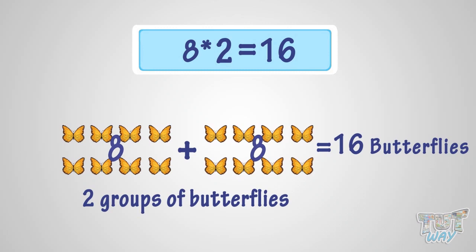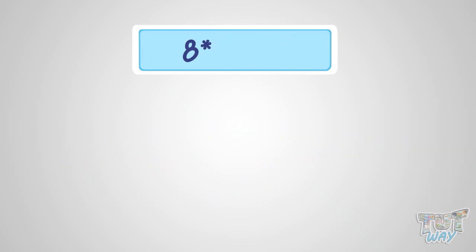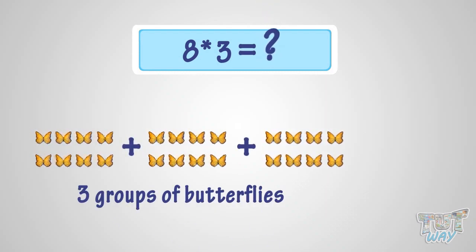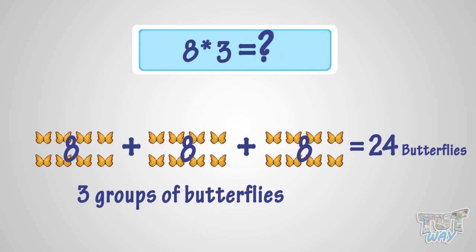What is 8 multiplied with 3? It is the same as three groups of 8 butterflies. So it is 24 butterflies. That is, 8 multiplied by 3 is 24.